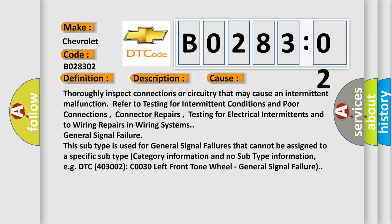This subtype is used for general signal failures that cannot be assigned to a specific subtype category information and no subtype information. For example, DTC 400 and 3002 CO030 left front tone wheel: general signal failure.